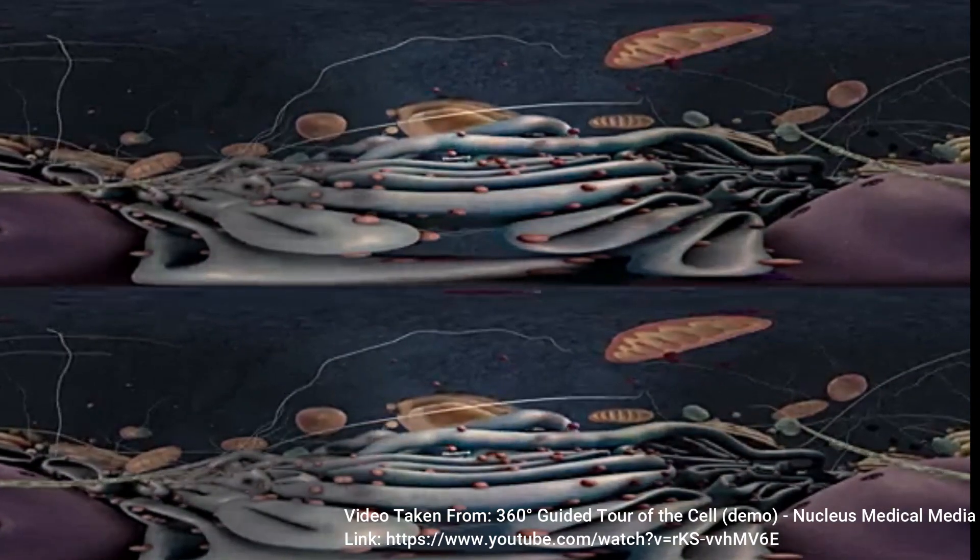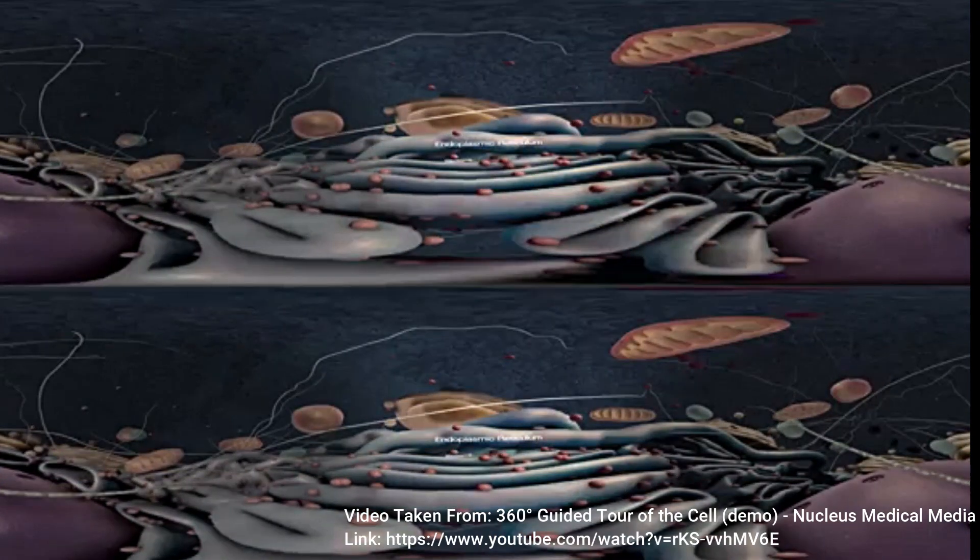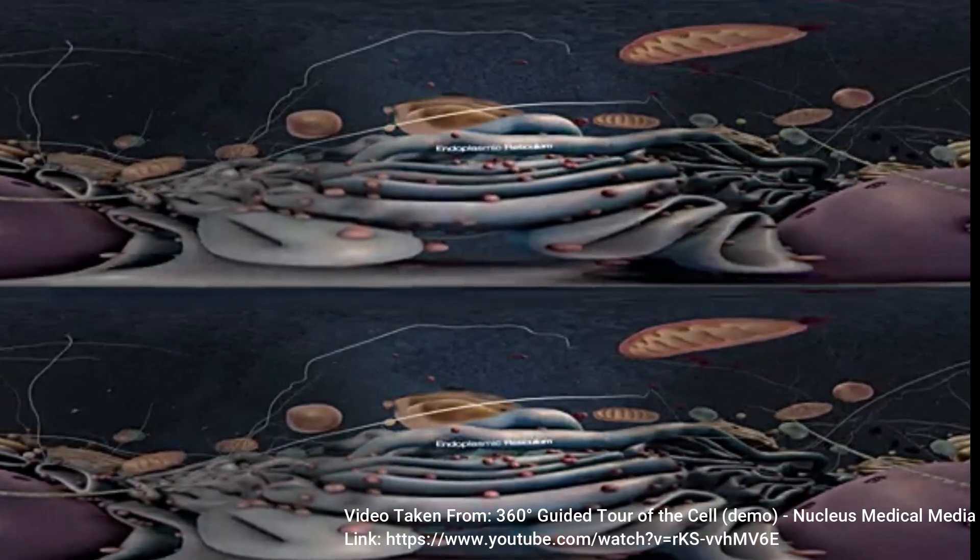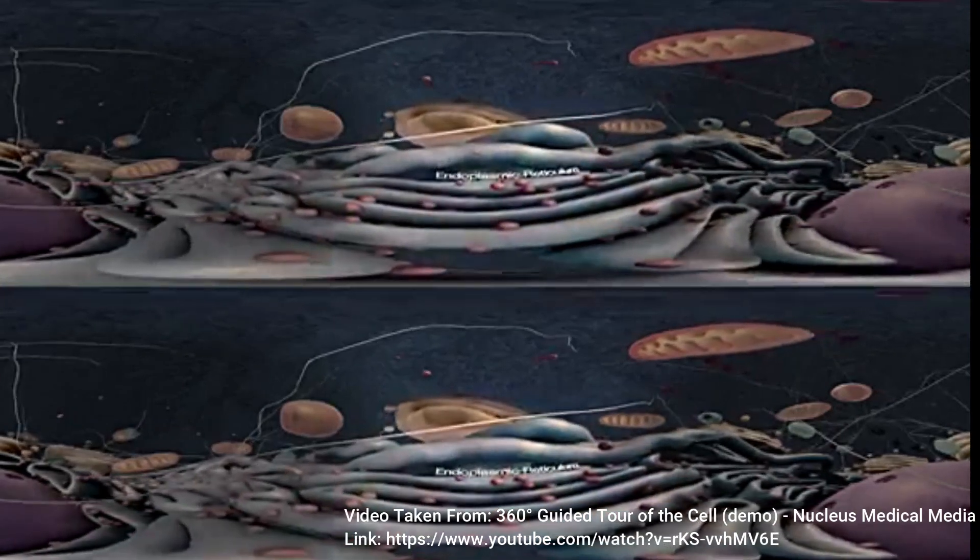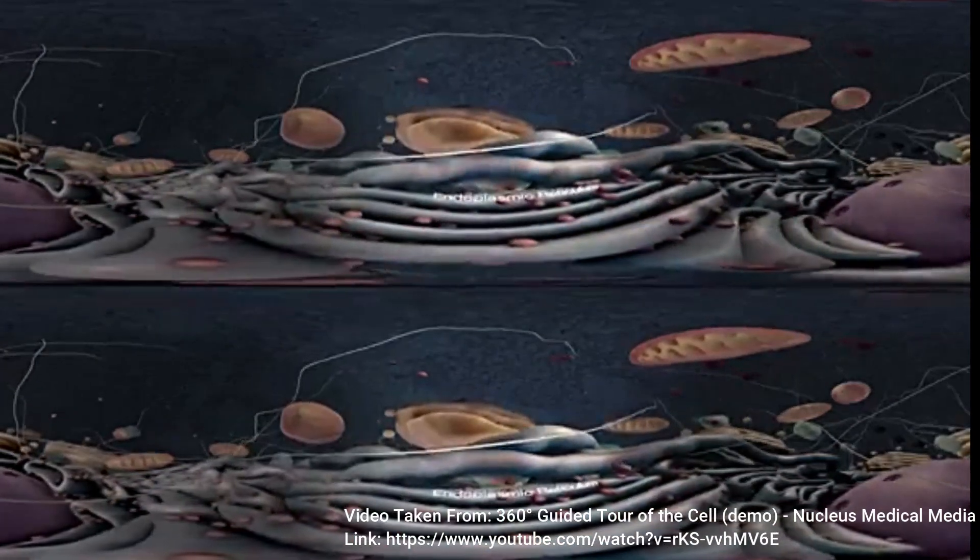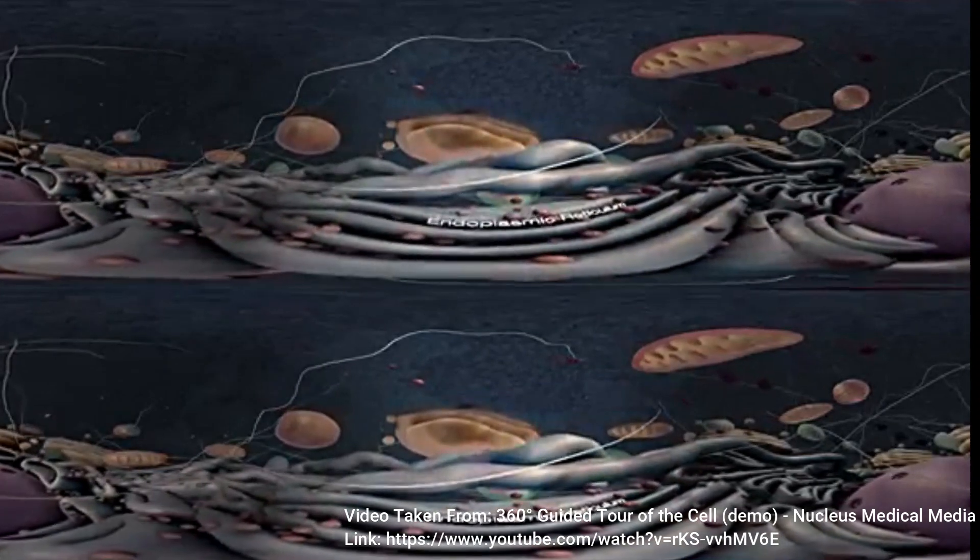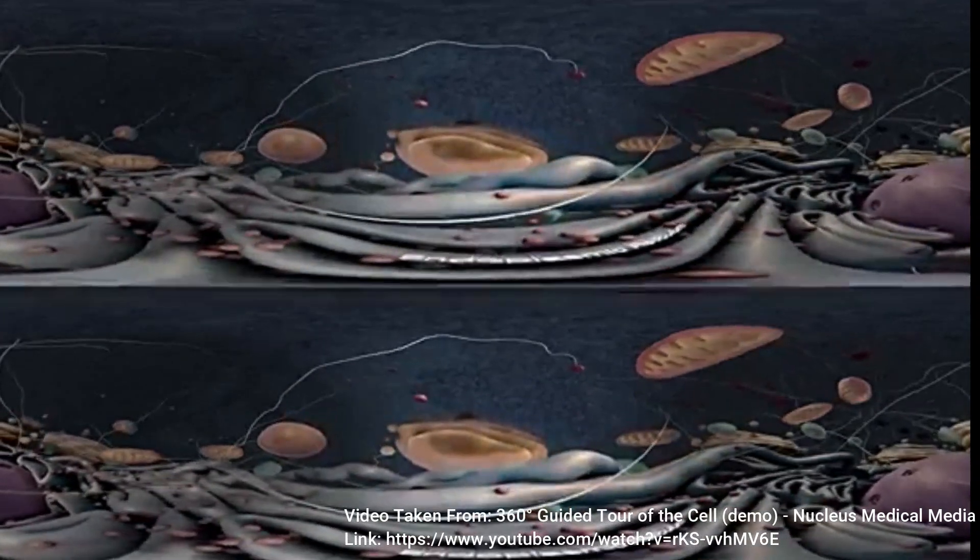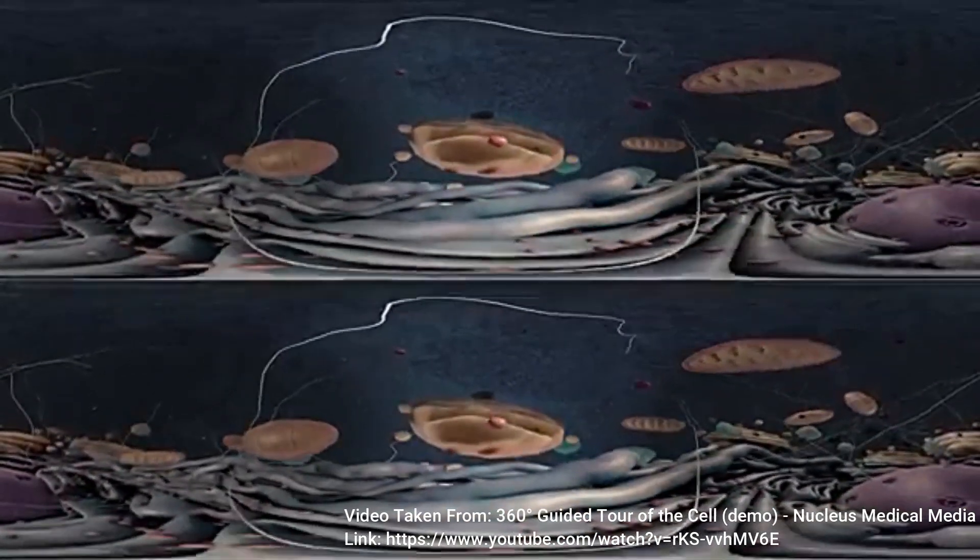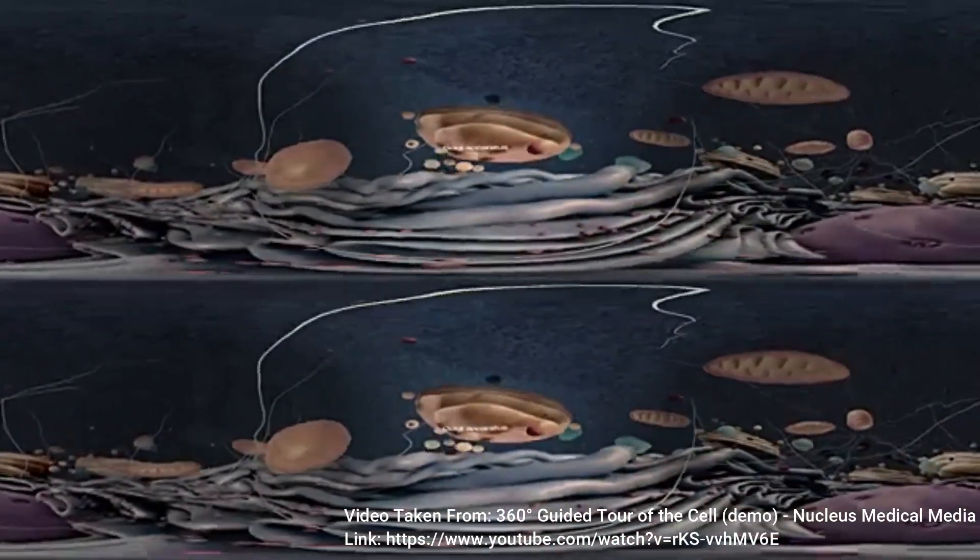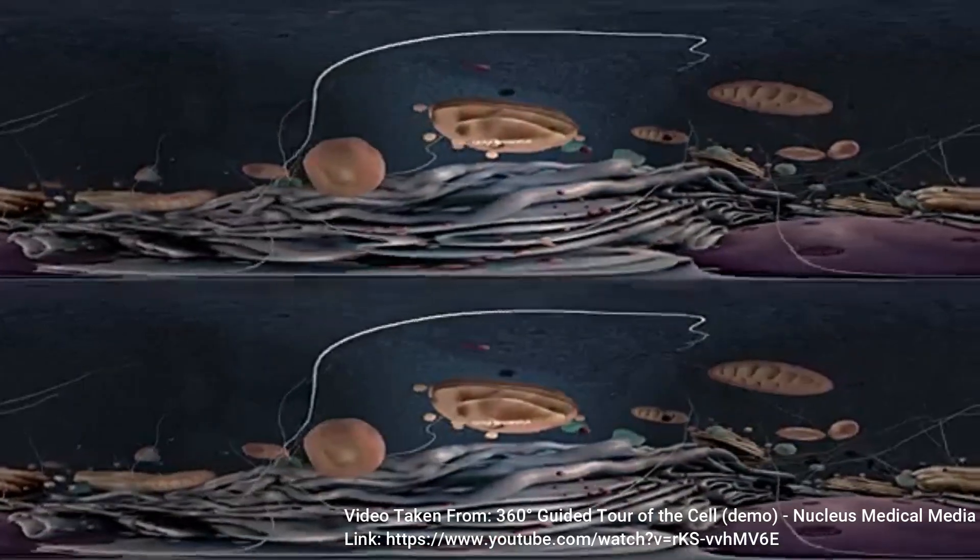The endoplasmic reticulum, also called the ER, is made up of the smooth and rough subunit. It's a network of membranous tubes that are involved in the synthesis, modification, and transport of these proteins that are synthesized by the ribosomes. Once a protein is ready, it leaves the ER in a membrane bound vesicle and travels through the cytoplasm to the Golgi body, also called the Golgi apparatus.